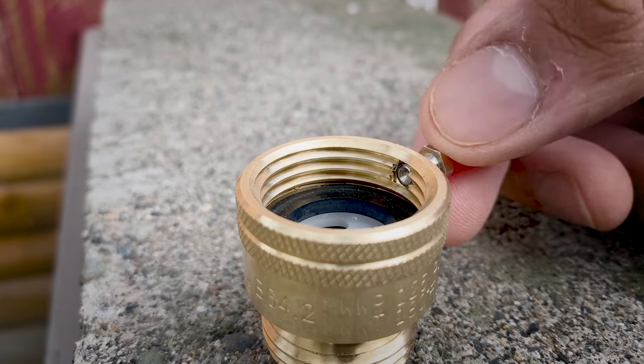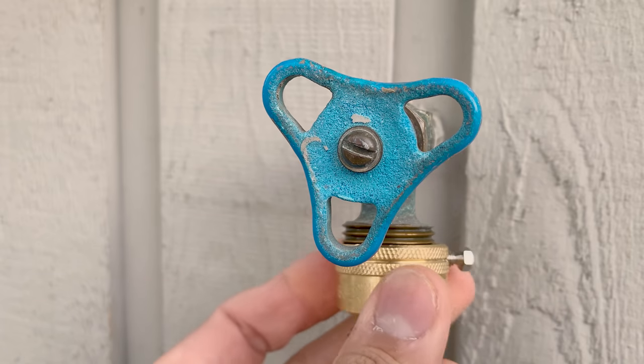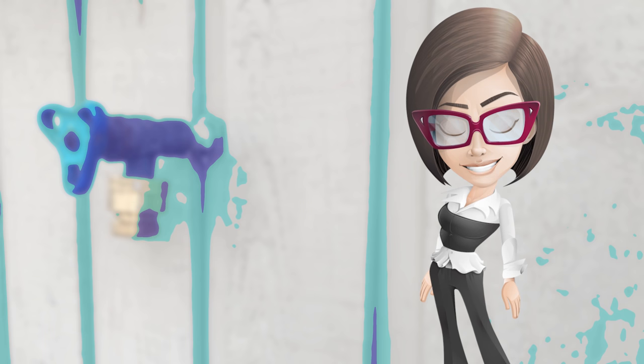Now back up the set screw all the way and thread the vacuum breaker on the hose bib. Do not over tighten.